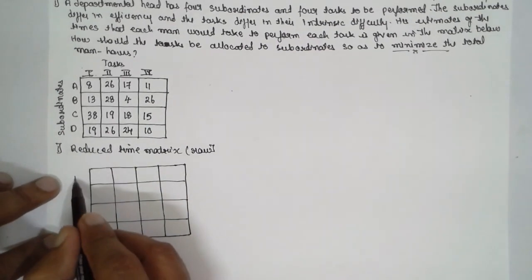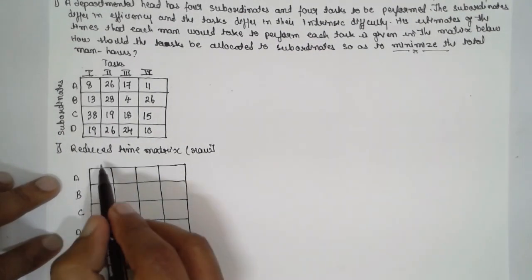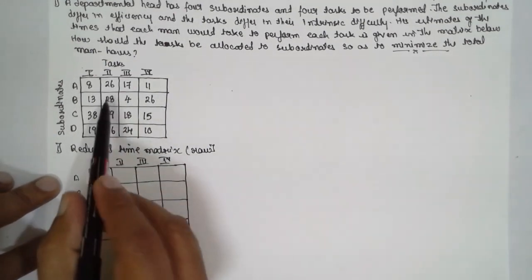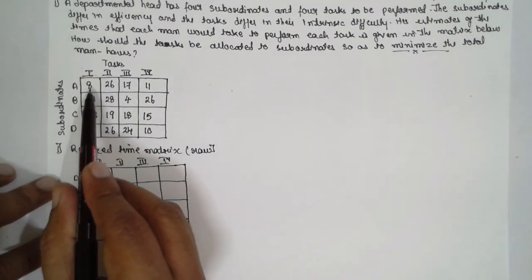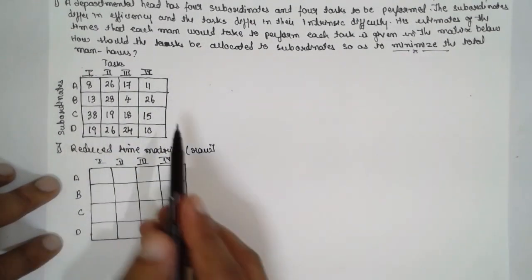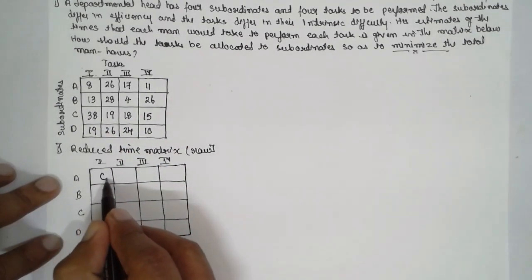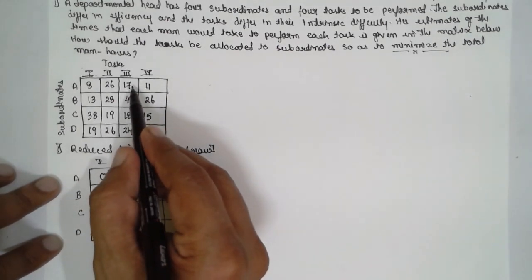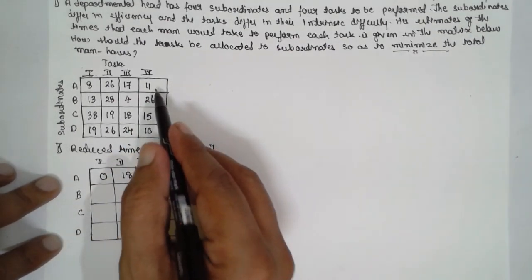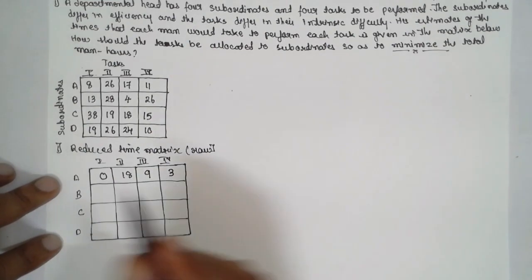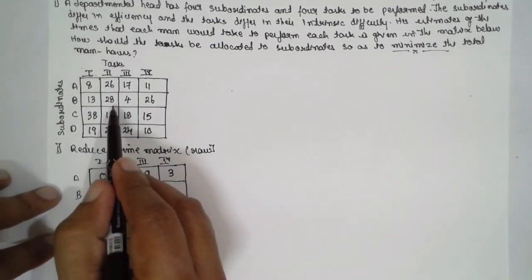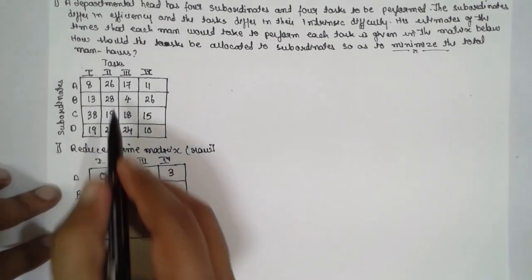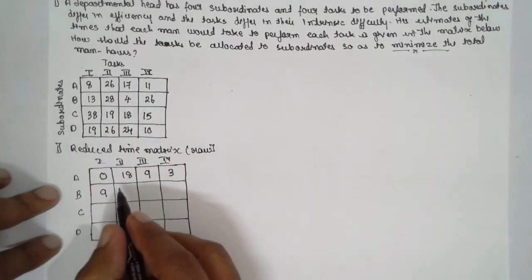Rows are A, B, C, D and columns are 1, 2, 3, 4. For the first row, the minimum value is 8. So: 8 minus 8 = 0; 8 minus 26 = 18; 17 minus 8 = 9; 11 minus 8 = 3. For the second row, the smallest value is 4. So: 13 minus 4 = 9; 28 minus 4 = 24; 4 minus 4 = 0; 26 minus 4 = 22.